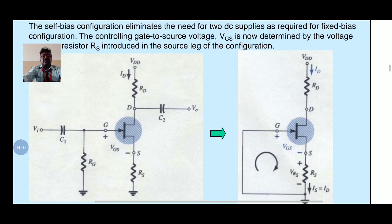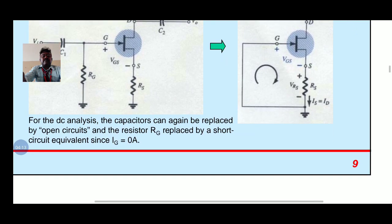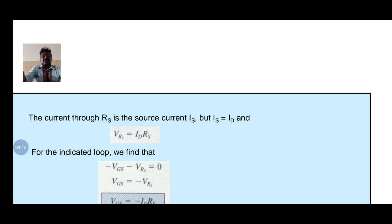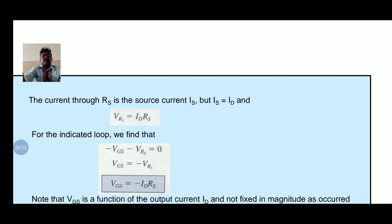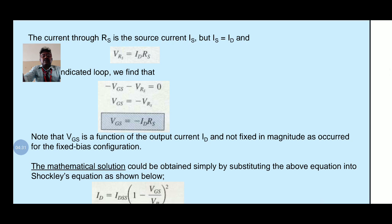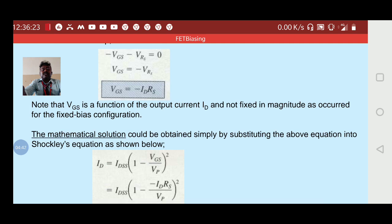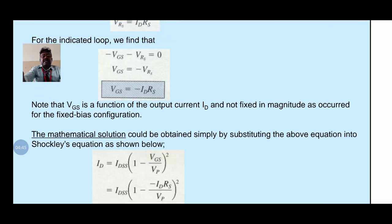The figure shows the self bias configuration, with and without capacitance. The current through RS is a source element IS, where IS equal to ID and VRS equal to ID into RS. For the indicated loop, minus VGS minus VRS equal to 0, so VGS equal to minus ID into RS. Note that VGS is a function of the output current ID and not fixed in magnitude as occurred for the fixed bias configuration.